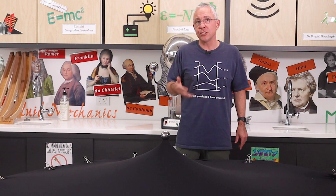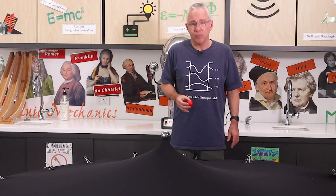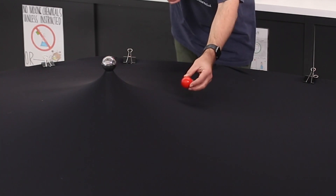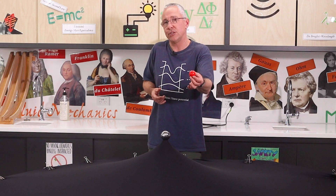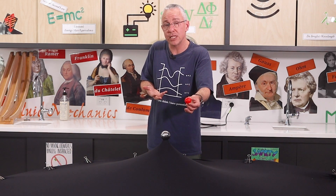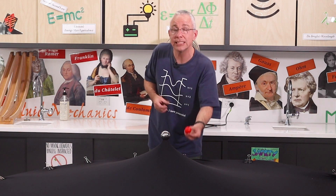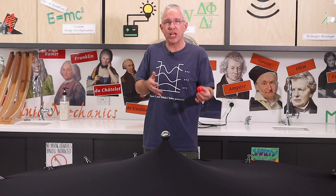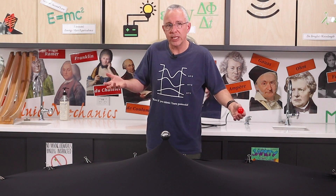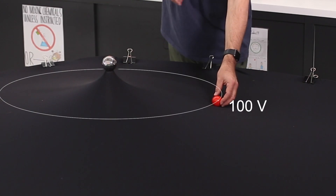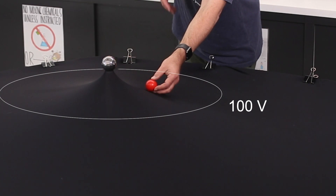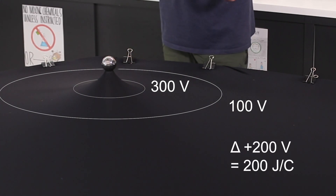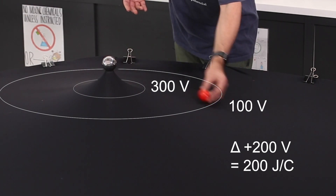We can now talk about what a positive test charge will do in terms of work. We use this red ping pong ball to represent our positive test charge. If I move it from infinity — where voltage is zero — to a point within the field, I've raised its gravitational potential energy in this model, which corresponds to raising its electrical potential energy. Dividing by the test charge gives us the voltage, which is the work done bringing it from infinity to somewhere within the field. If the voltage here is 100 and I move it to where the voltage is 300, the change is 200 volts — meaning I've done 200 joules per coulomb of work to move the charge from one point to another.